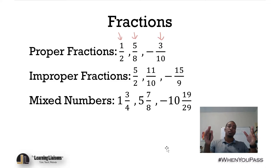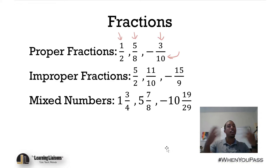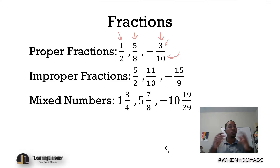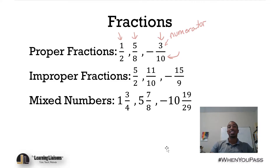Proper fractions are always, always, always less than one, because the denominator represents the whole, the entirety. So if you have three out of ten, you don't have the whole — you don't have one of that thing you're talking about. That's why proper fractions are always less than one, because the numerator — the number up top — is less than the denominator.